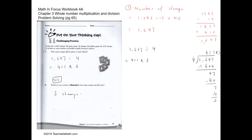Problem solving question 1: Charlie has 1243 stems. He gives away 12 of them and his father gives him 415. He then divides as many stems as possible equally among four albums. First question: how many stems did he place in each album? First, find the number of stems that he has.